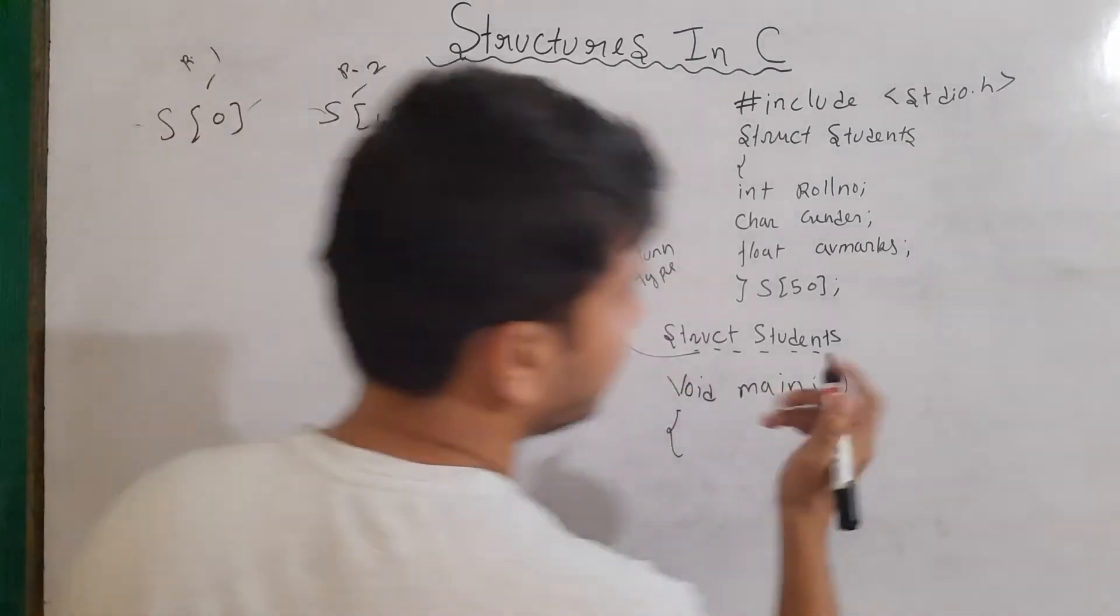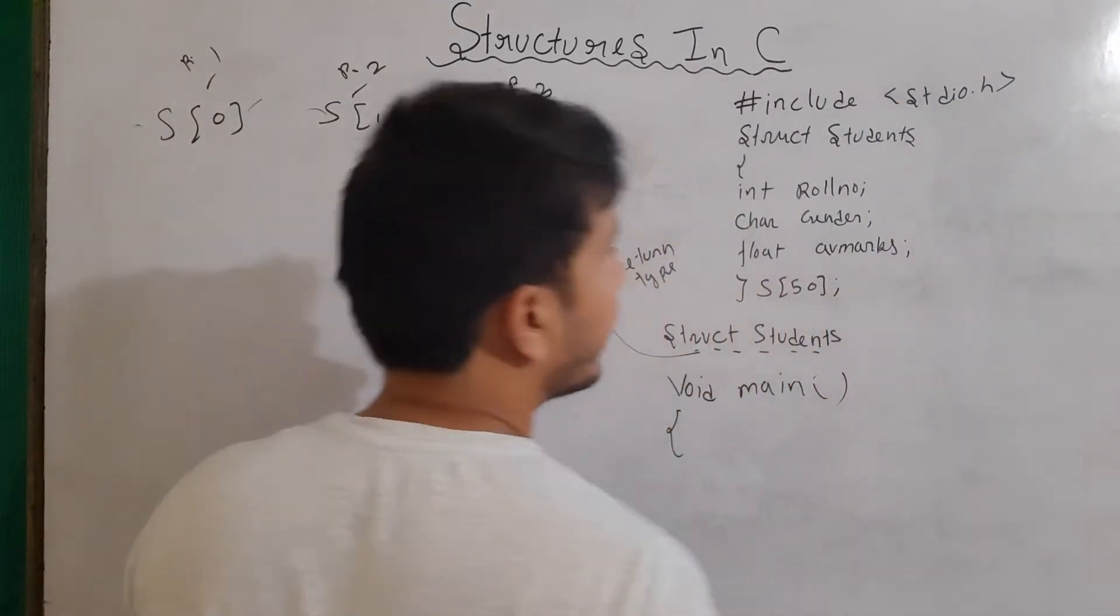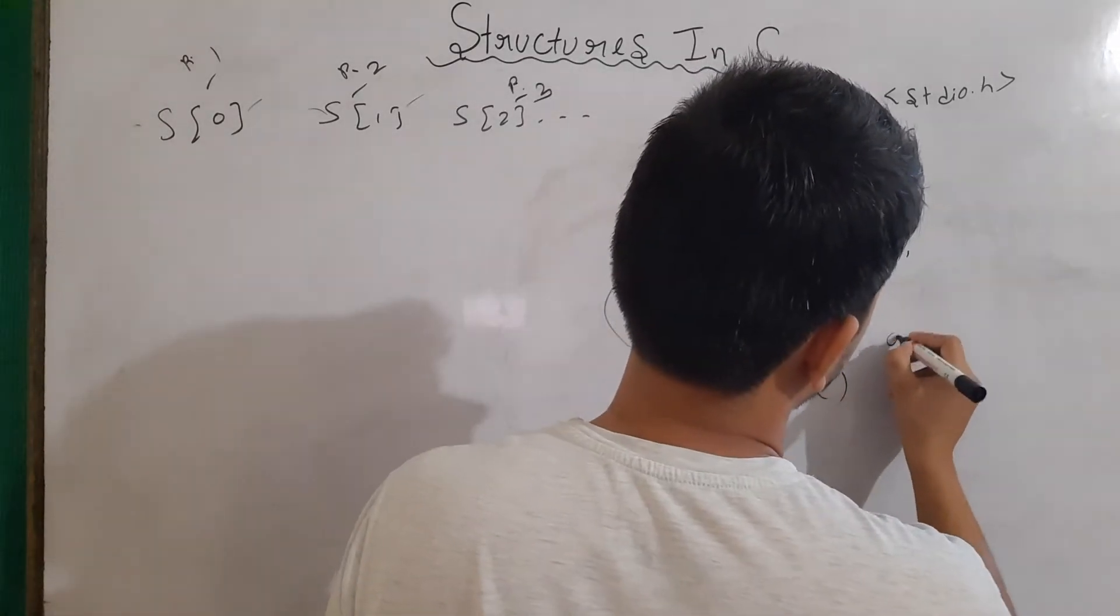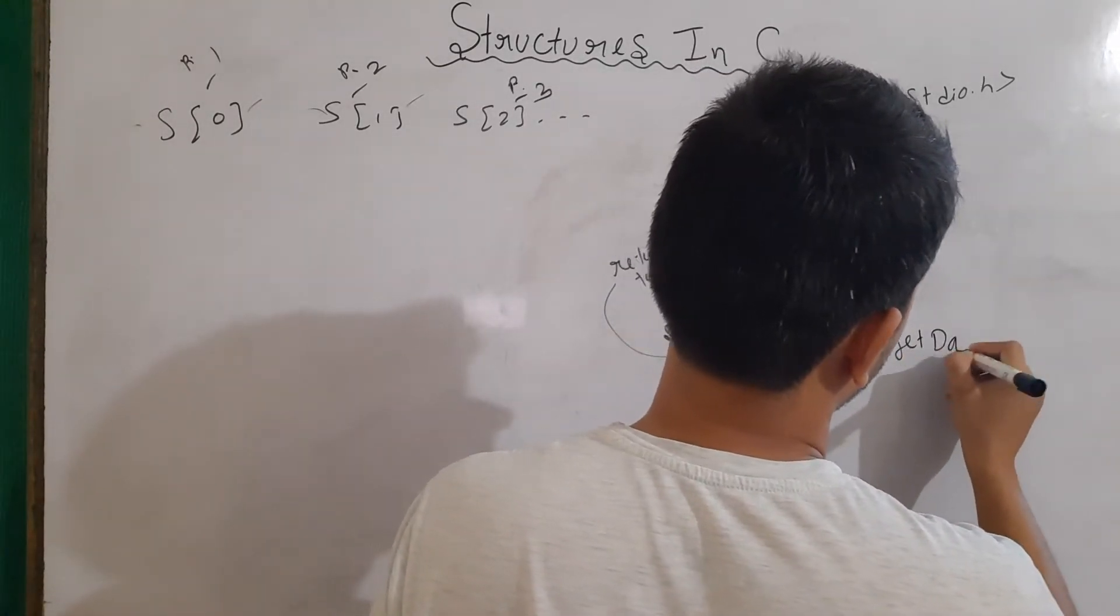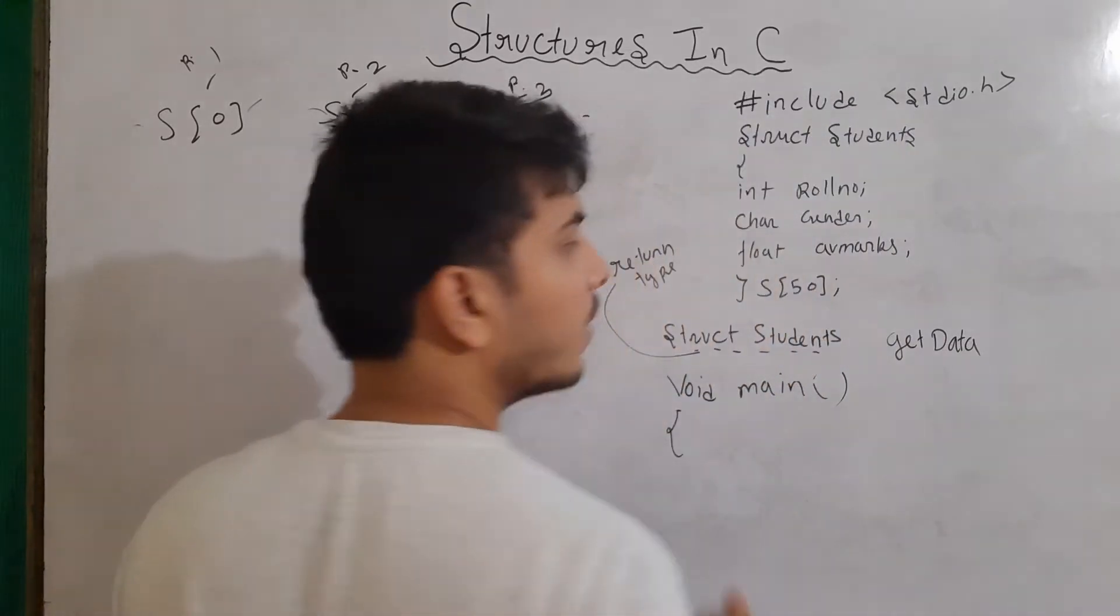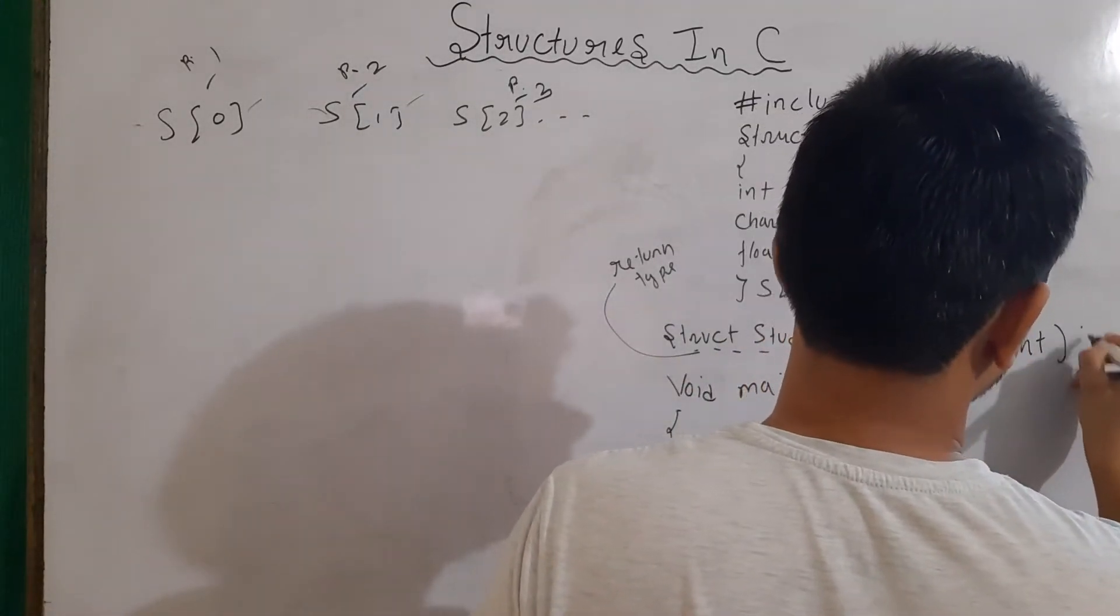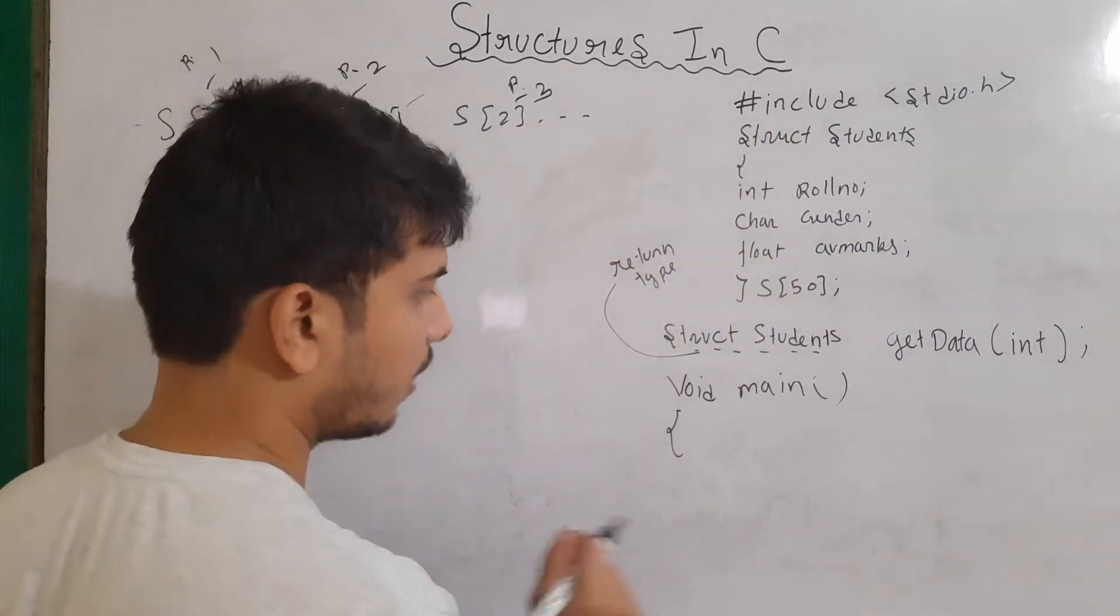Now, after that, we will write what is the name of our function. So, we will write here, let's say, get data. And then, what it should accept? It should accept a value of type integer. So, this will be our function prototype.